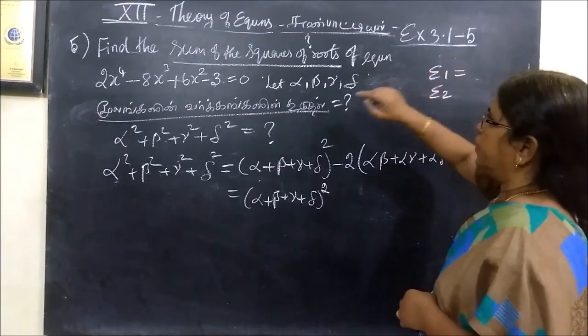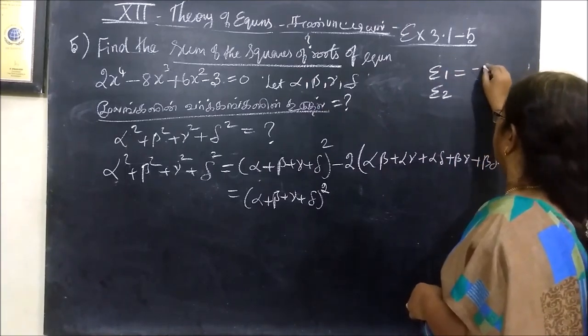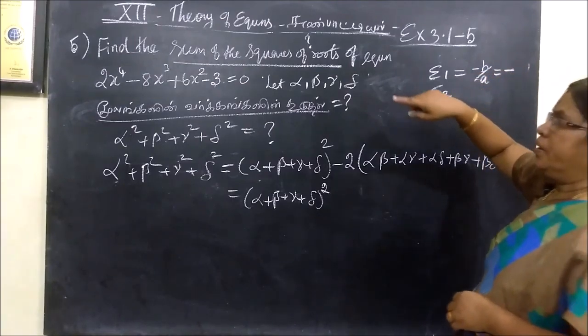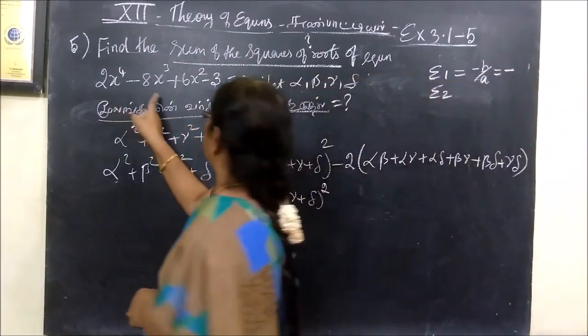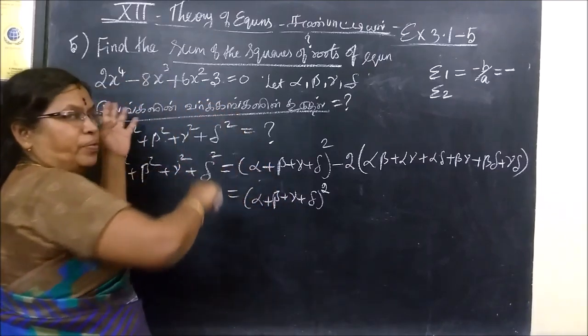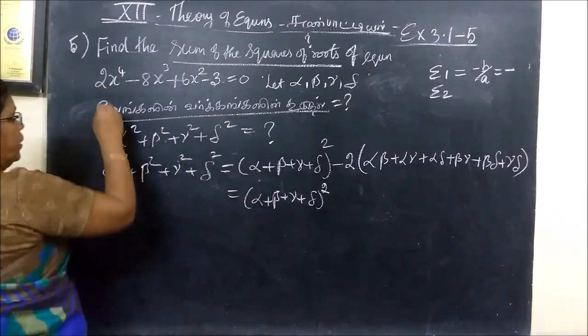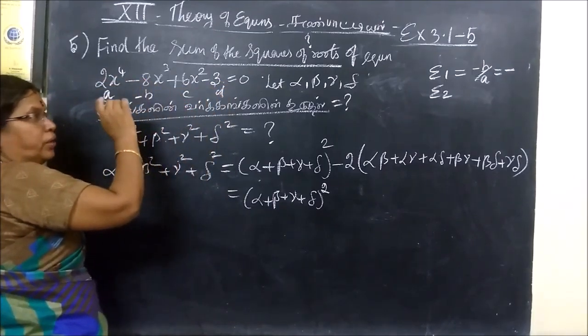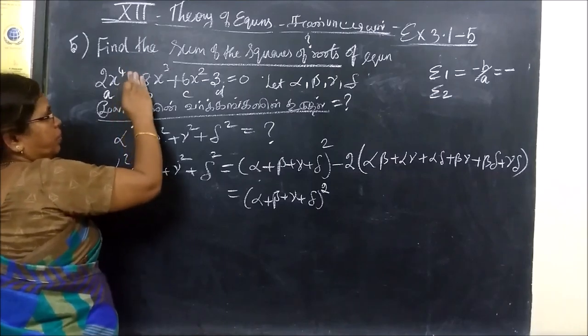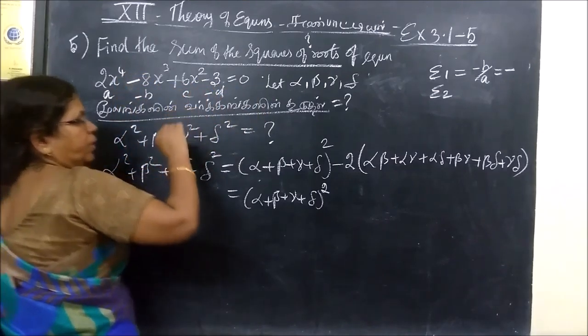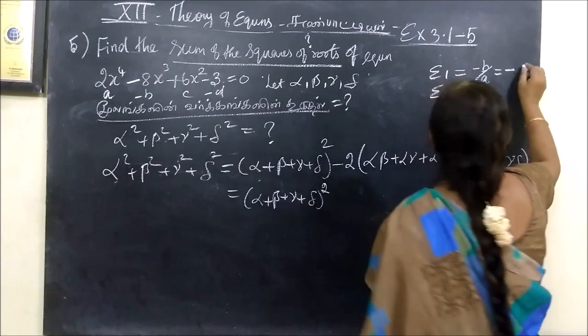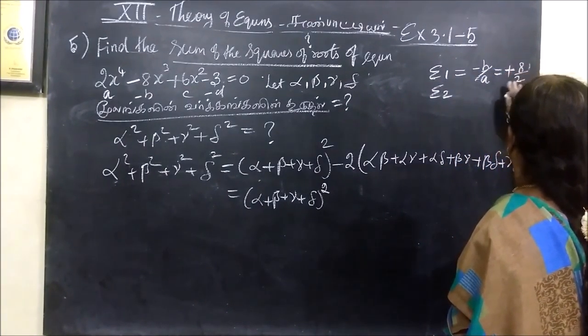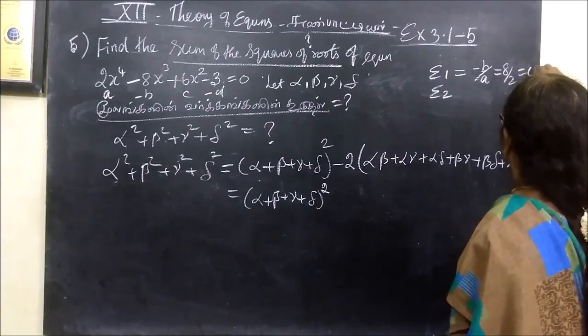Sigma1 formula is minus b by a. So minus b by a. The signs alternate plus, minus, plus, minus. Here is a, b, c, d. So 8 by 2 equals 4.